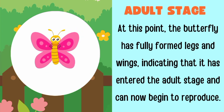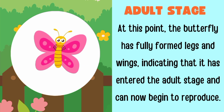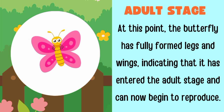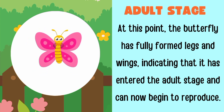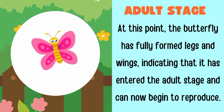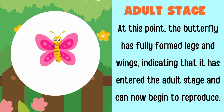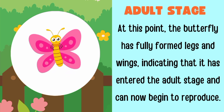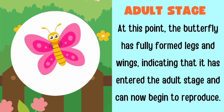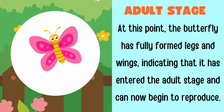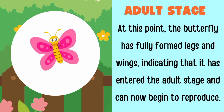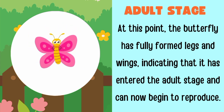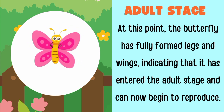The fourth and last stage is called the adult stage. At this point, the butterfly has fully formed legs and wings. Now the butterfly is ready.